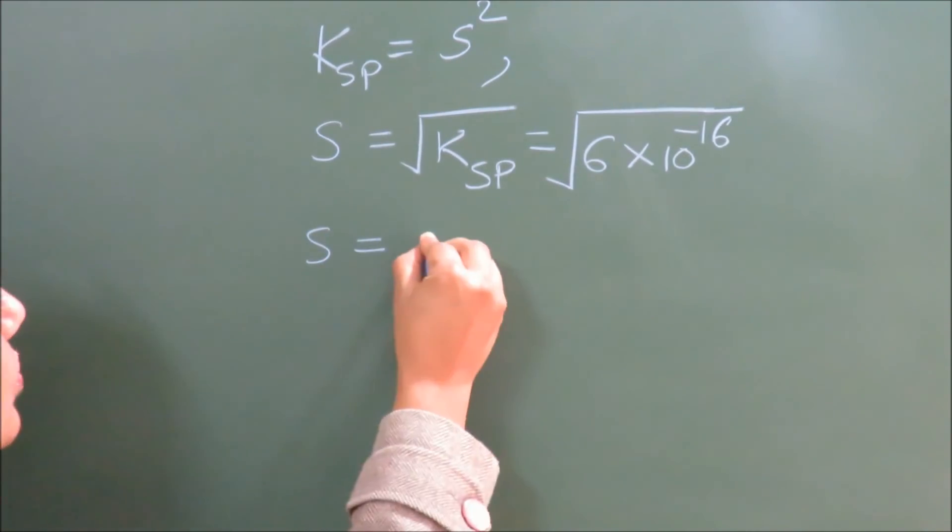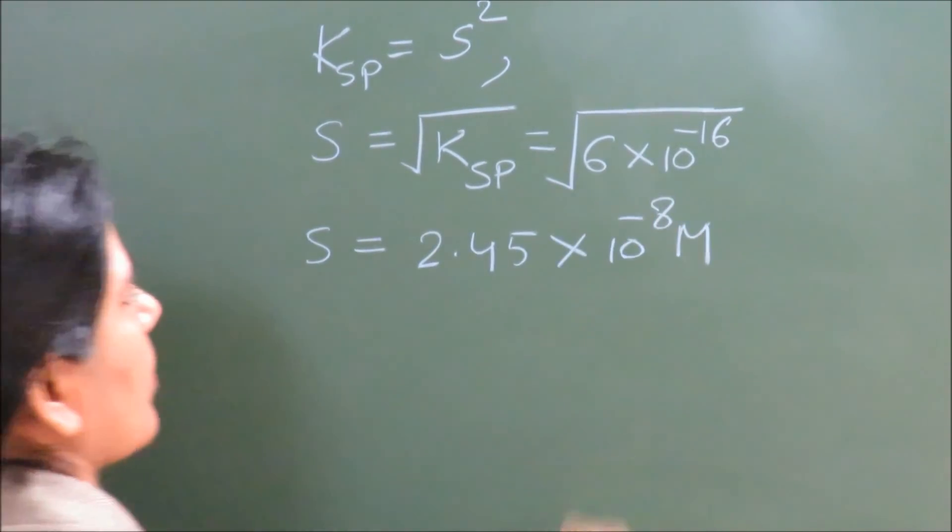The value of S, the maximum solubility, will come out to be 2.45×10^-8 molar at the stage of equilibrium. This is the maximum solubility of CuS in aqueous solution at equilibrium.